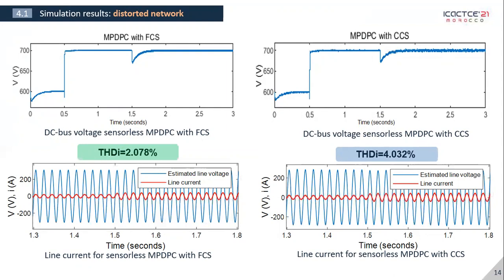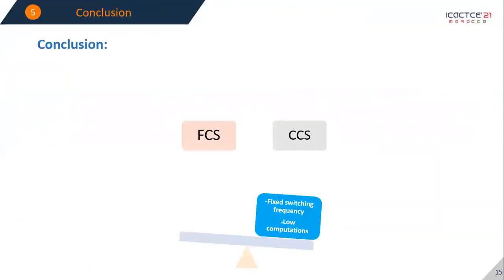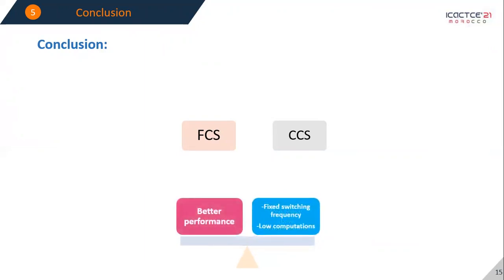So from that we can conclude that although CCS has the upper hand when it comes to operating at constant switching frequency and having lower computations, FCS compensates for this balance with better performance.